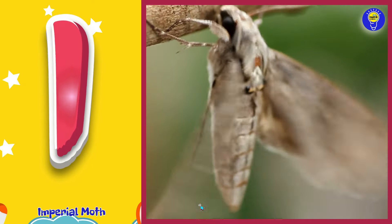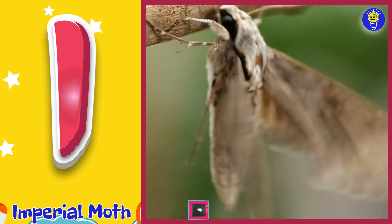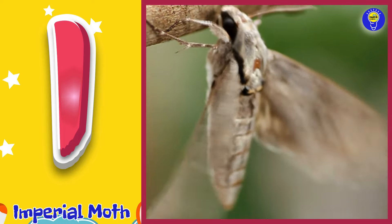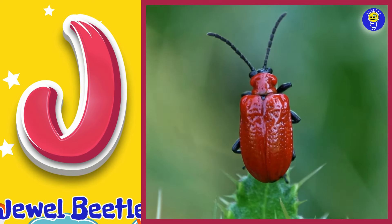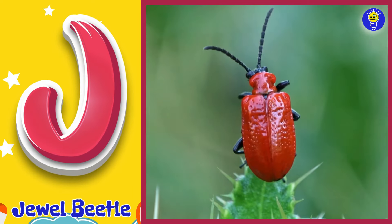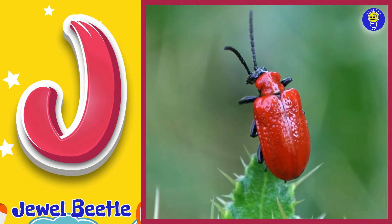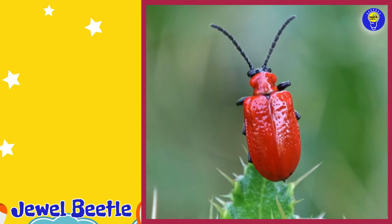I is for imperial moth. I, imperial moth. J is for jewel beetle. J, jewel beetle.